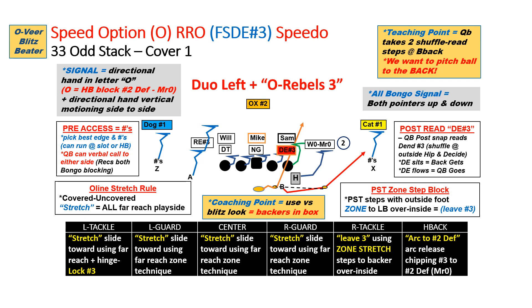Last is speed option, using the same exact blocking schemes. The play side tackle now has a head up or inside alignment so he'll do his zone stretch step release blocking the Sam backer, the first backer head up or inside. The quarterback will still take his two shuffle steps attacking the outside leg of the defensive end, but with the ball up in front of his chest in the ready position for an option pitch technique. The running back still takes the same drop step and then runs keeping that five yard spacing. Usually when we attack with an option look, this forces the end to be more aggressive attacking the quarterback, and with speed option we really want to get the ball pitched to the back. So we've got three variations of one simple concept building off our stretch zone RPOs, giving you the ability to use your quarterbacks in a double option read scheme — a run-run option.